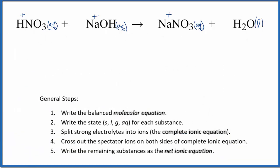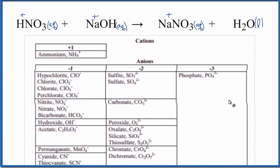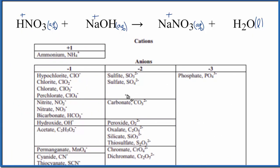So for NO3, the nitrate, you probably should memorize that it has a one minus charge. If your instructor allows it though, you can also look it up on this table here. So we find the nitrate, NO3 minus. So that has a one minus charge, a negative charge.